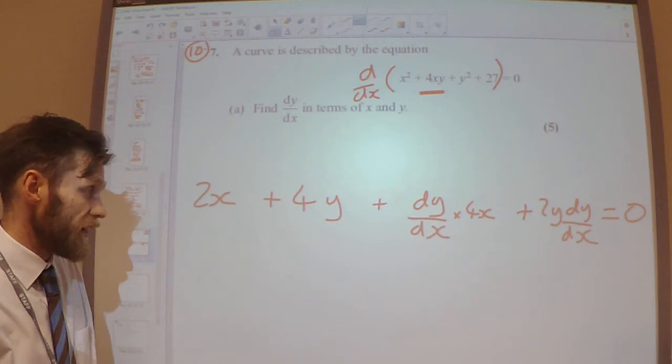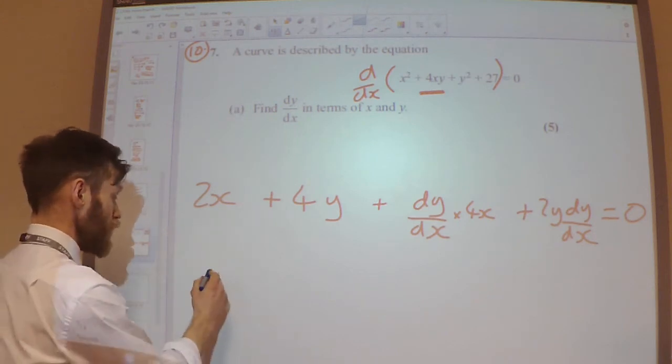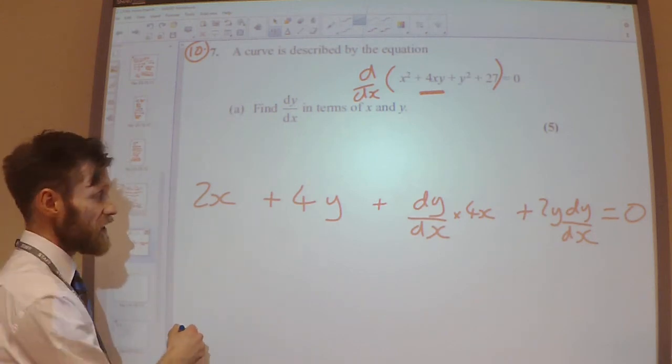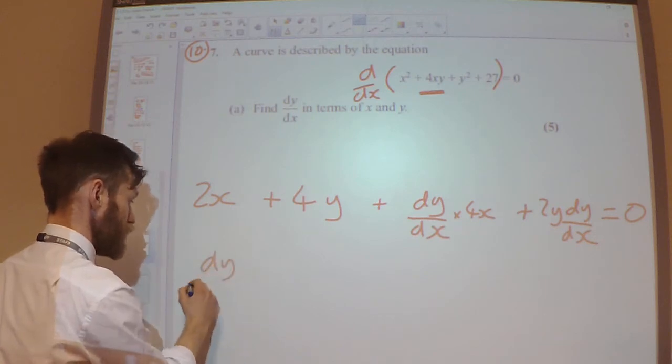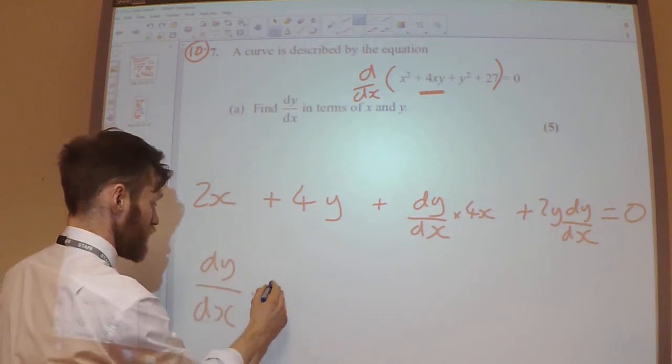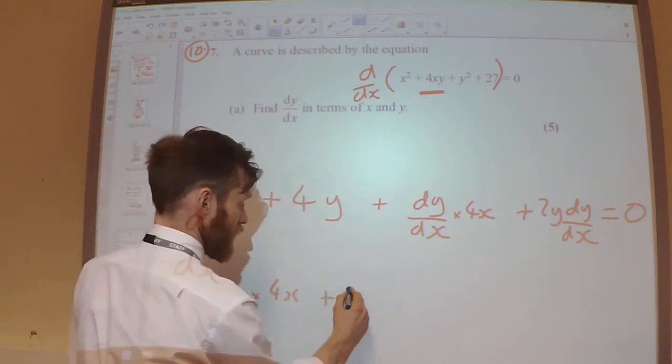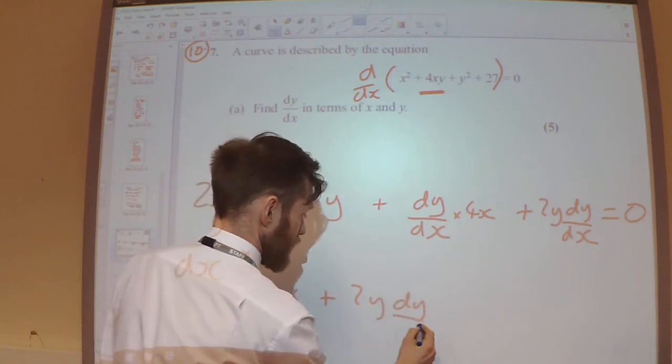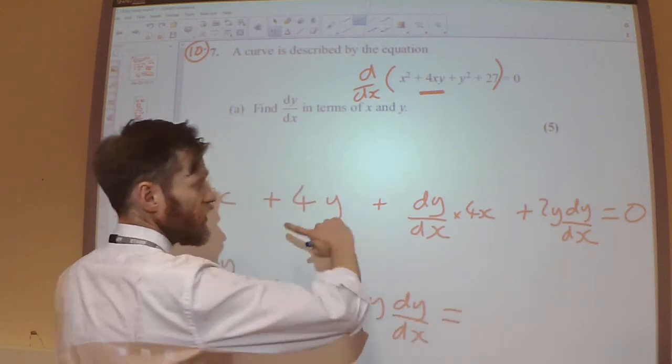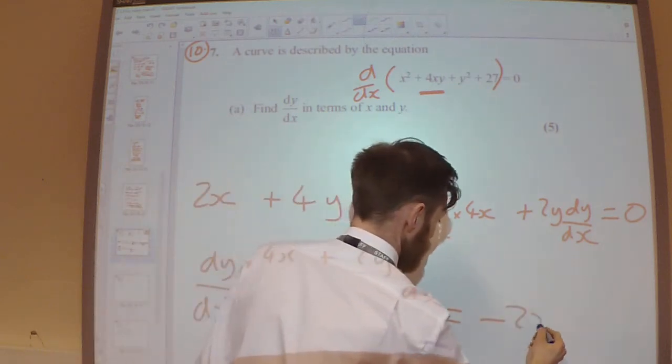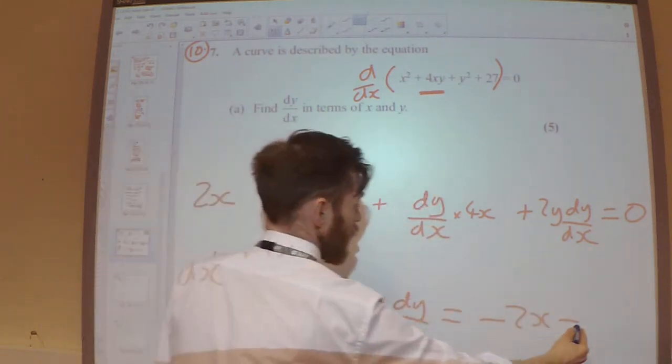Okay. Next job, everything that has dy/dx, keep it on the left-hand side. So I've got dy/dx times 4x, and I've got 2y dy/dx. On the right-hand side, I've got minus 2x minus 4y.